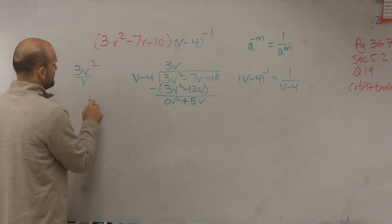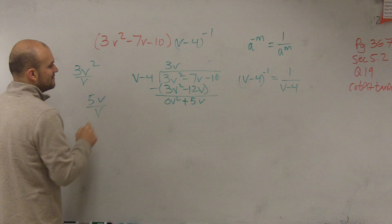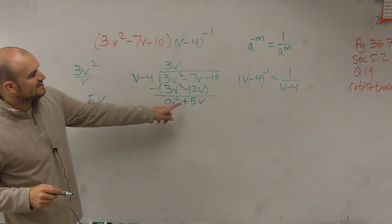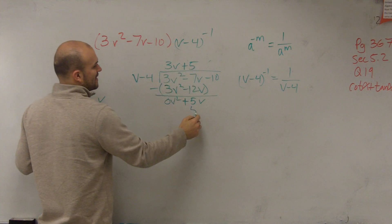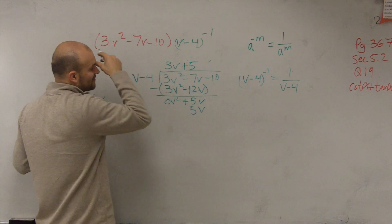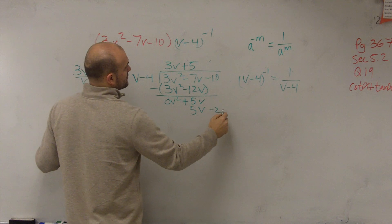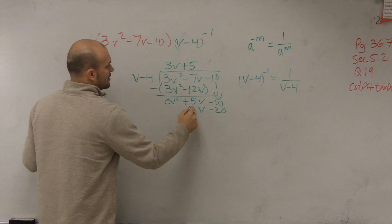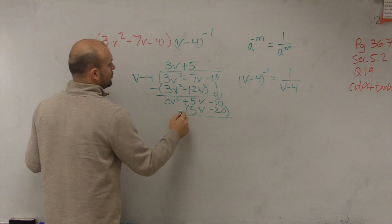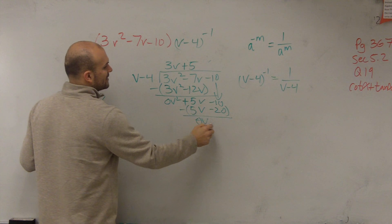Now we have 5v being divided by v. So v divides into 5v a positive 5 times. 5 times v is 5v. 5 times negative 4 is going to be a negative 20. Bring down the negative 10. Put in parentheses, subtract the whole row.